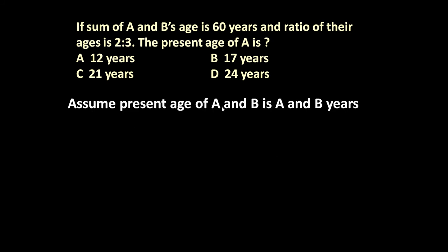let us assume present age of A and B is A and B years. It means A plus B equals 60 because it is given sum of A's age and B's age is 60 years.